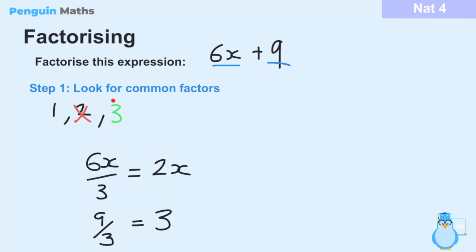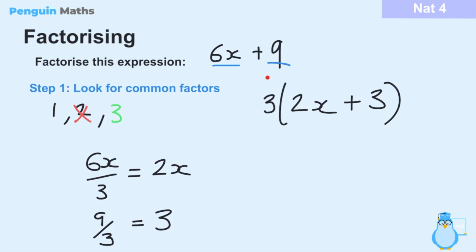Once we have this information, the highest common factor goes outside the bracket and the two divided parts go inside. So we rewrite it as 3(2x + 3). We can check this is correct by multiplying out the bracket: 3 multiplied by 2x gives us 6x, and 3 multiplied by 3 gives us 9. Doing that little check confirms this is the correct factorised form of the expression.